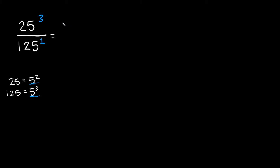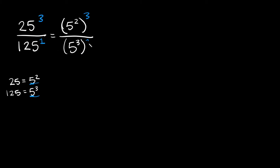So 25 I'm going to rewrite as 5 squared, and then we still have this 3 exponent, so keep it. That goes over 125, which is 5 cubed — let's rewrite that as 5 cubed, and then this is raised to the 1st power. Whenever you raise anything to the 1st power it doesn't change it, so 5 cubed raised to the 1st power is still just 5 cubed.